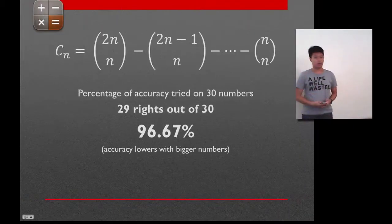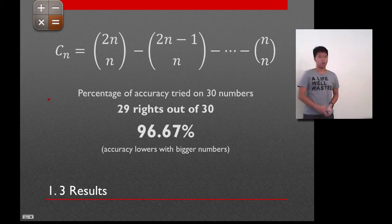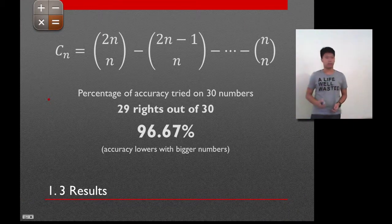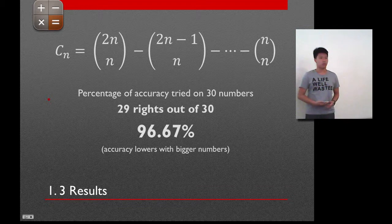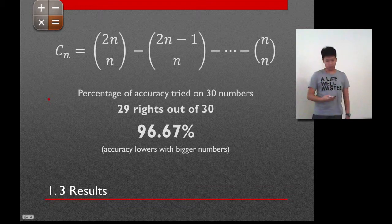With that explanation, here is my equation that I have found. It uses the N choose K method, or as known as the combination method. This equation, when tried on the 34th Catalan number, resulting in the accuracy of 96.67%, or 29 rights out of 30. This equation, however, lowers its accuracy when we are trying to calculate it with the bigger Catalan number.